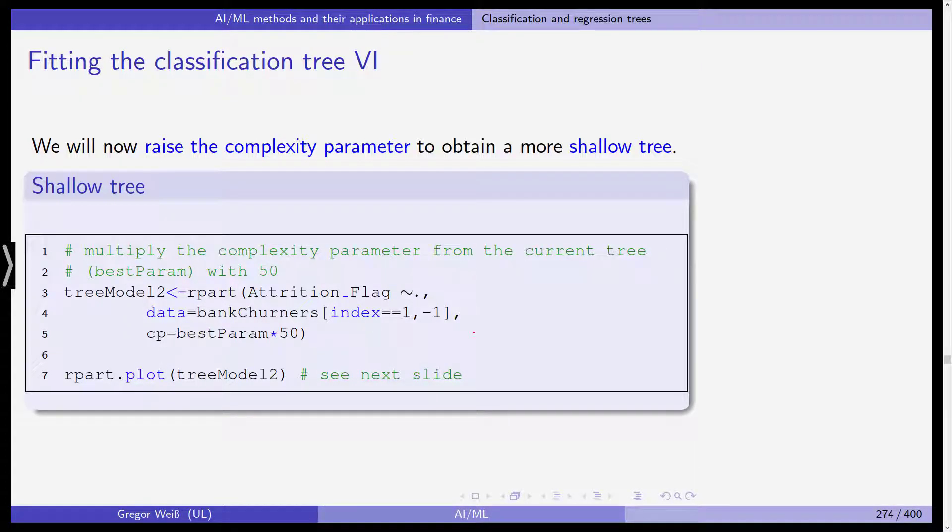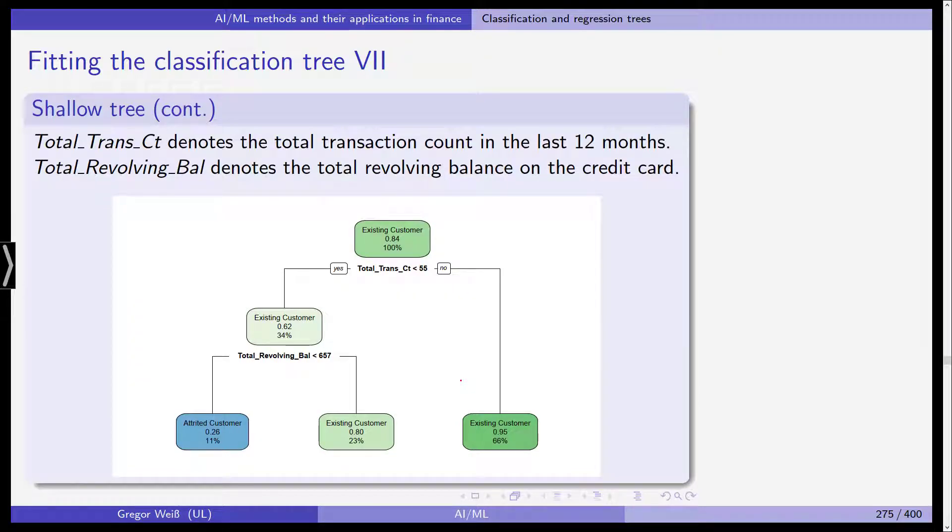We will now raise the complexity parameter to obtain a more shallow tree. We multiply the complexity parameter from the current tree with 50 and do the same again. What you get is on the next slide. You can see total transaction count, the total transaction count and the total revolving balance on the credit card. These two are quite high up in the tree, but this is where the partitioning stops.